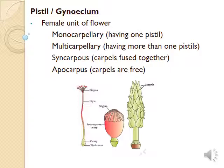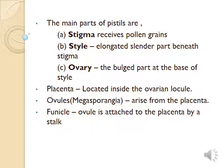The female part of a flower is named the pistil or carpel. A flower having only one pistil is called monocarpellary. A flower having more than one carpel is called multicarpellary. In some flowers, carpels may be fused, which is called syncarpous; if carpels are free, it is called apocarpous. The female part of a flower consists of three parts: stigma, style, and ovary.